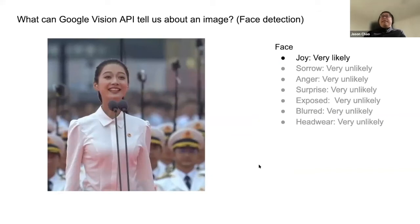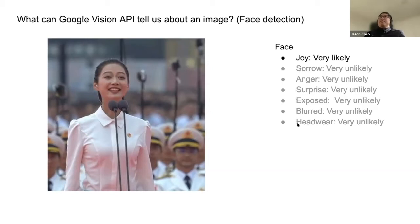Google Vision API also does facial recognition — it detects emotions from faces. For example, with a lady showing a joyful expression, Google Vision tells you for all supported expressions what the likelihood is. It shows that this face is very likely to be joyful, very unlikely to be sorrow or anger, et cetera. Google Vision API does pretty well in recognizing faces, but there is a limitation I will show you in a bit.